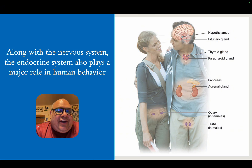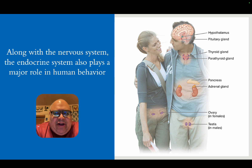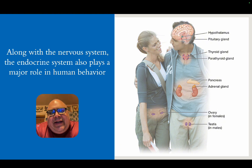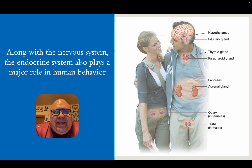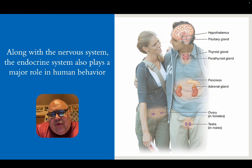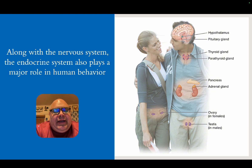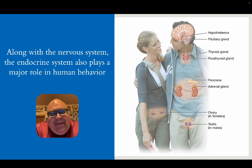Along with the nervous system, the endocrine system — a system of hormone-producing glands throughout our body, like the pancreas, adrenal gland, and thyroid gland — also plays an important role. It's a different role from the nervous system, but there is a tight connection and dependence between these glands, the endocrine system, and the nervous system. I want to highlight that there are other parts of our body, besides the nervous system, that are actually involved in thinking and cognition.